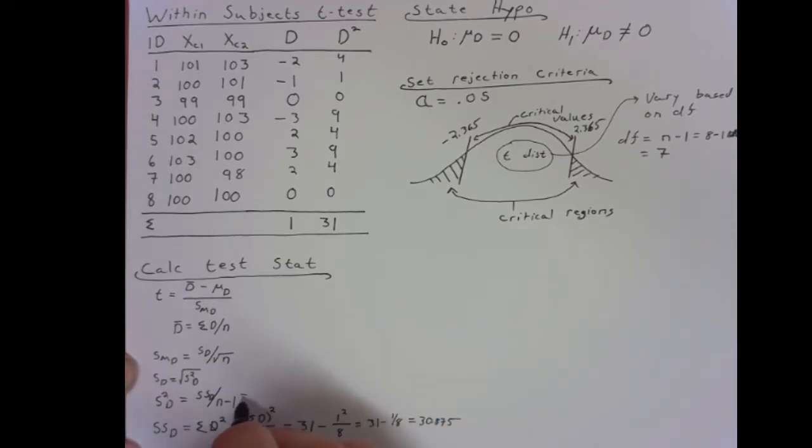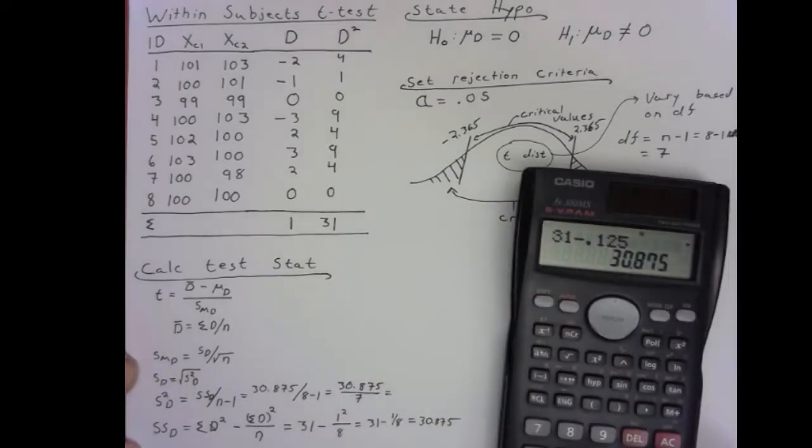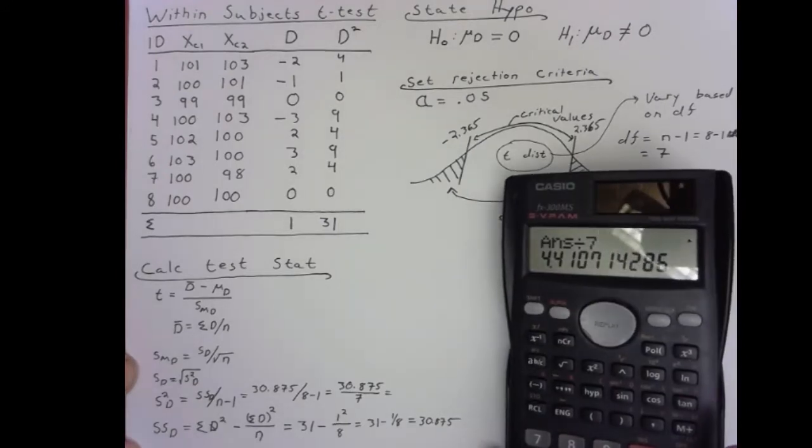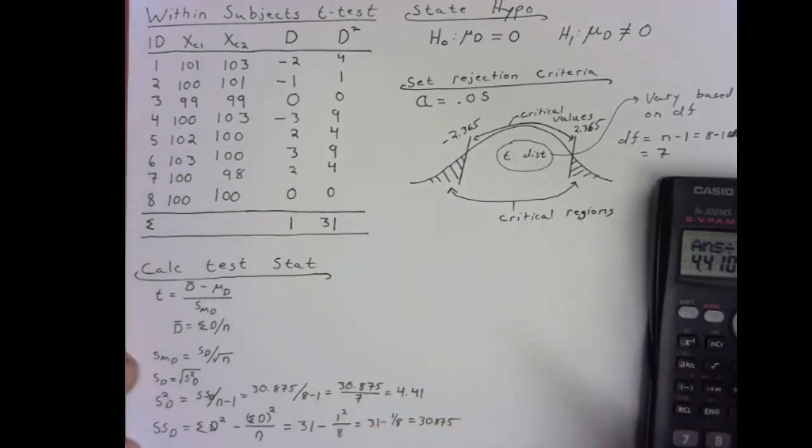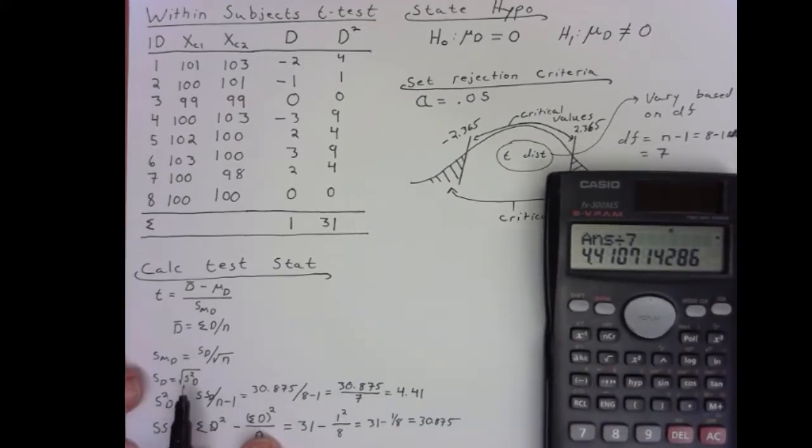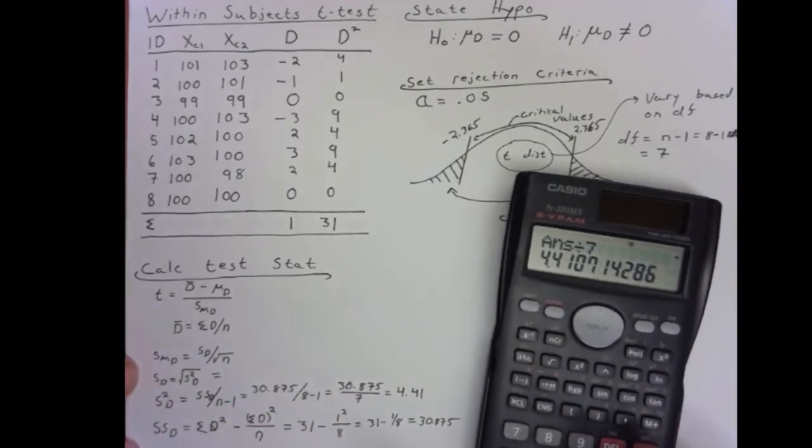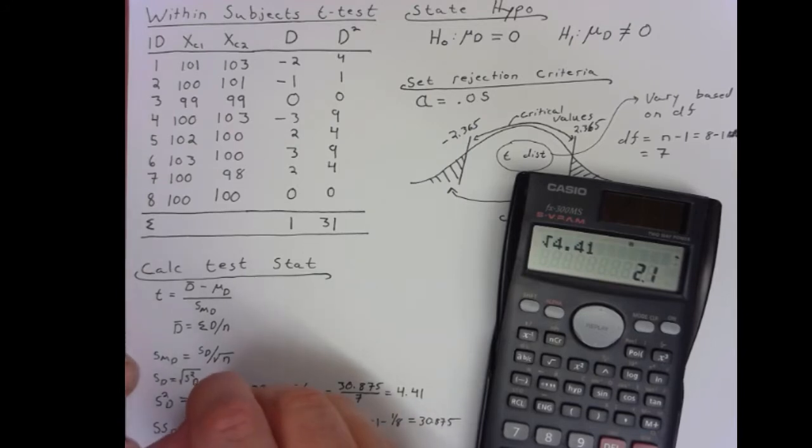Now we can come up here. 30.875 divided by 8 minus 1. 30.875 divided by 7 gets us 4.41. I'm going to round to two decimal places as I write out here, but I'm actually going to keep as much as I can in my calculator as I go. Now we essentially need the square root of that. I have to do square root of 4.41. Just carrying out the two decimal places gets us 2.1.